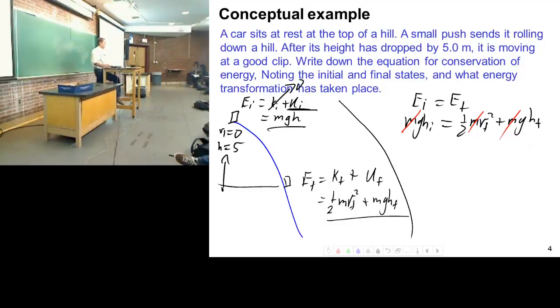Now, if our h final, if we were at the bottom of the hill, then this just becomes 0 and potential equals kinetic. If it's not, then it's something else. So we'll solve a few more examples of this. And what was the energy transformation? I went from potential energy and I ended up with kinetic energy. And possibly some potential energy left over.